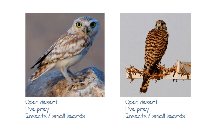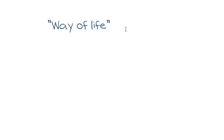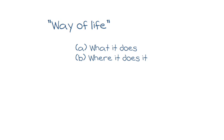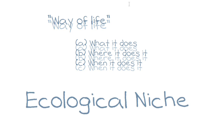So what is an ecological niche? It could be described as the way of life of a species or population. This would include what it does, where it does it, and when it does it. From this description of an ecological niche, we can clearly see that the kestrel and the owl differ in when they feed, so therefore they do not occupy the same niche.